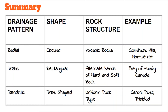Here's a summary. The radial drainage pattern has a circular shape. It is usually found around volcanic rocks where there is a peak. One example is Soufrière Hills in Montserrat. The trellis pattern looks rectangular as tributaries form at right angles. It usually has alternate bands of hard and soft rock. One example is the Bay of Fundy in Canada. The dendritic drainage pattern has a tree shape with uniform rock structure. One example is the Caroni River in Trinidad.